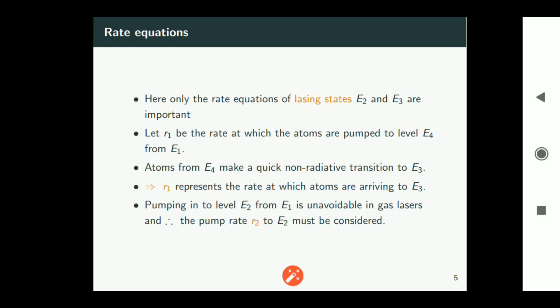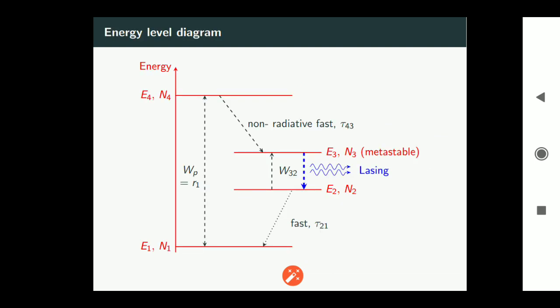Pumping into level e2 from e1 is unavoidable in gas systems. Therefore, pump rate r2 to e2 must be considered if we are dealing with gas system. So these two rates are not shown in the previous energy level diagram.